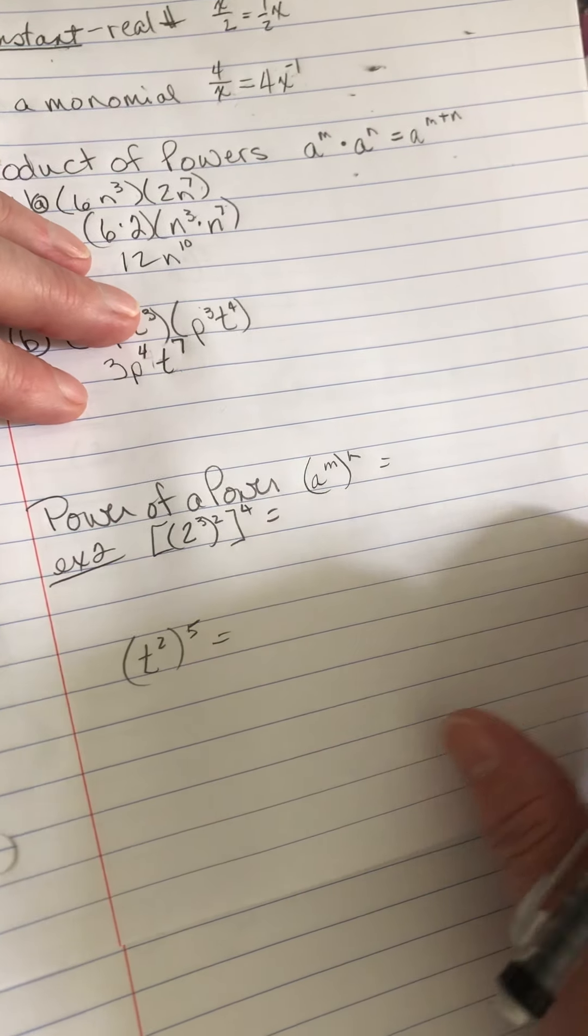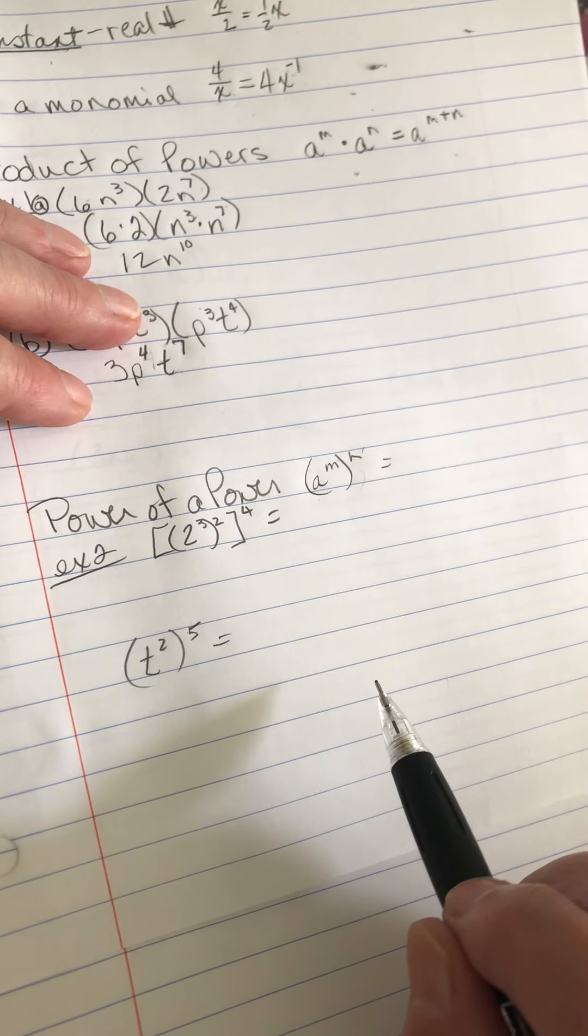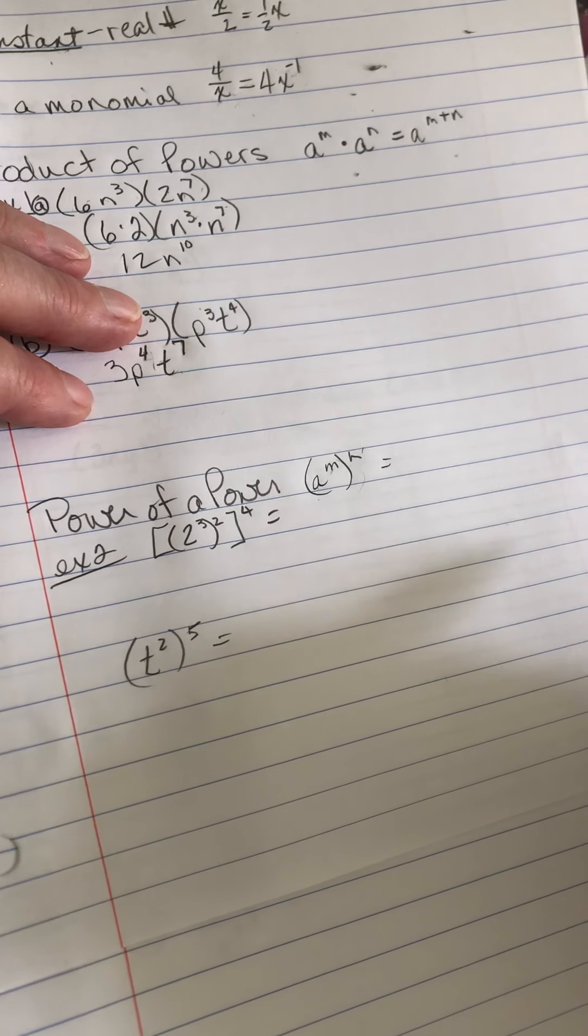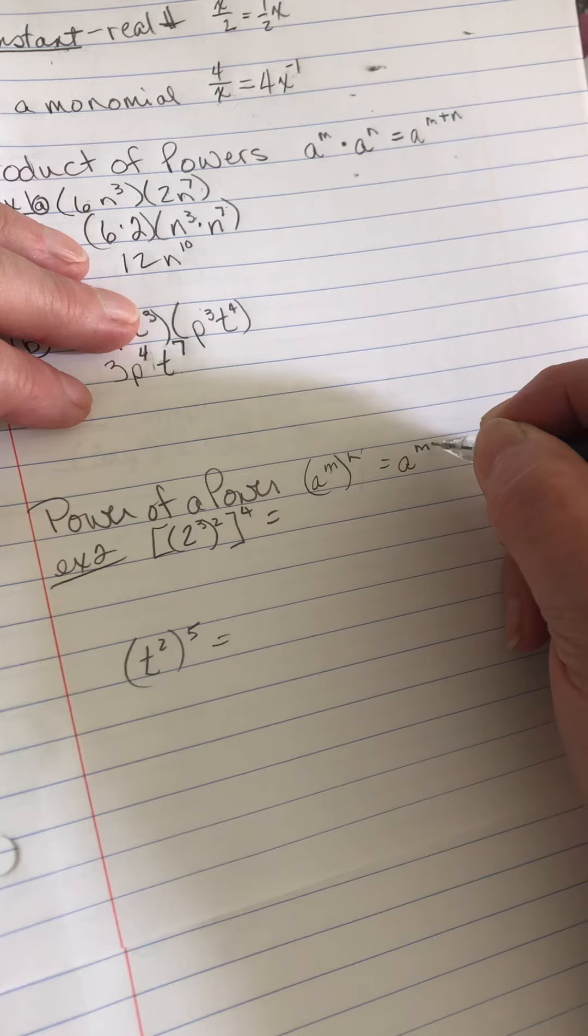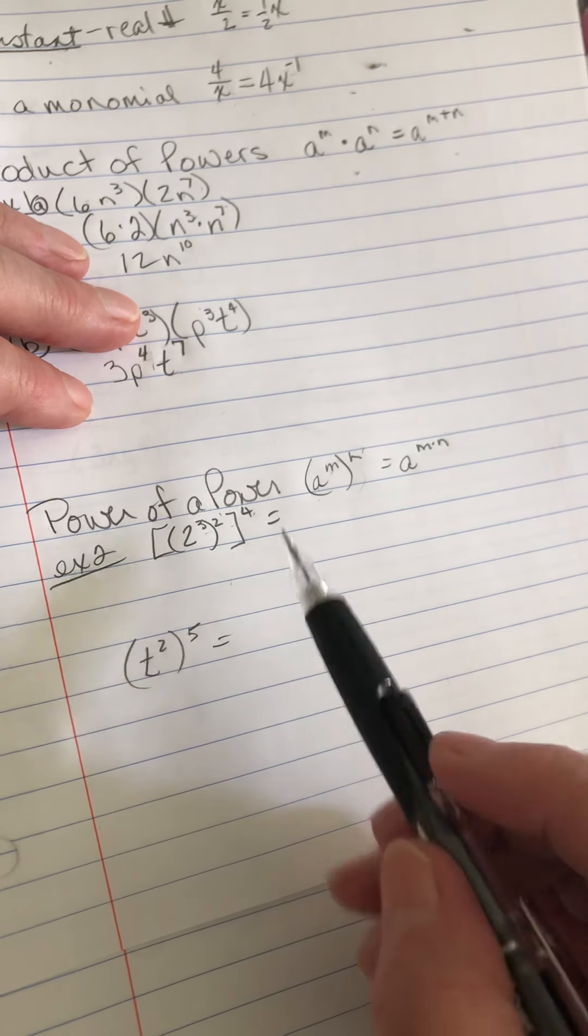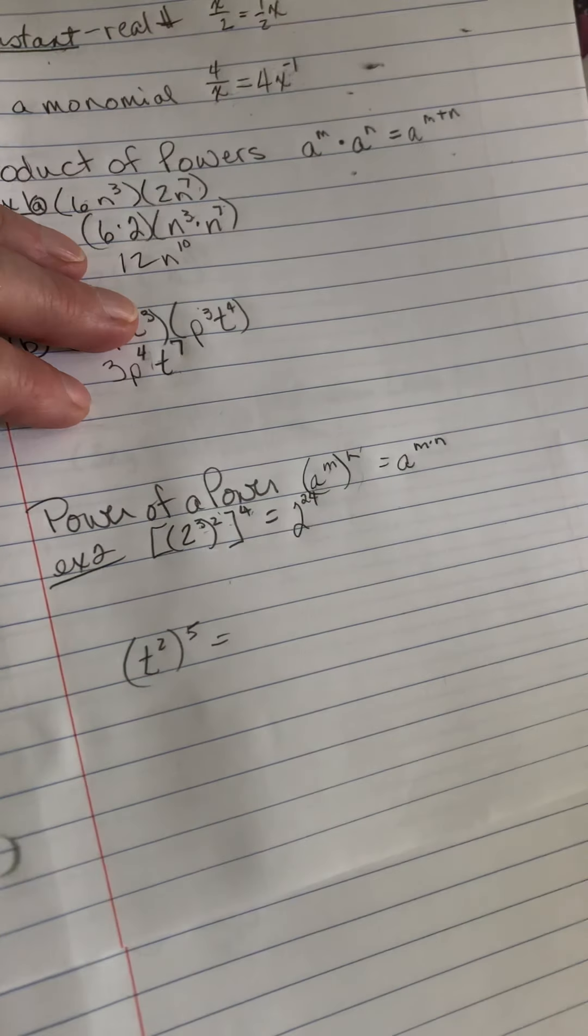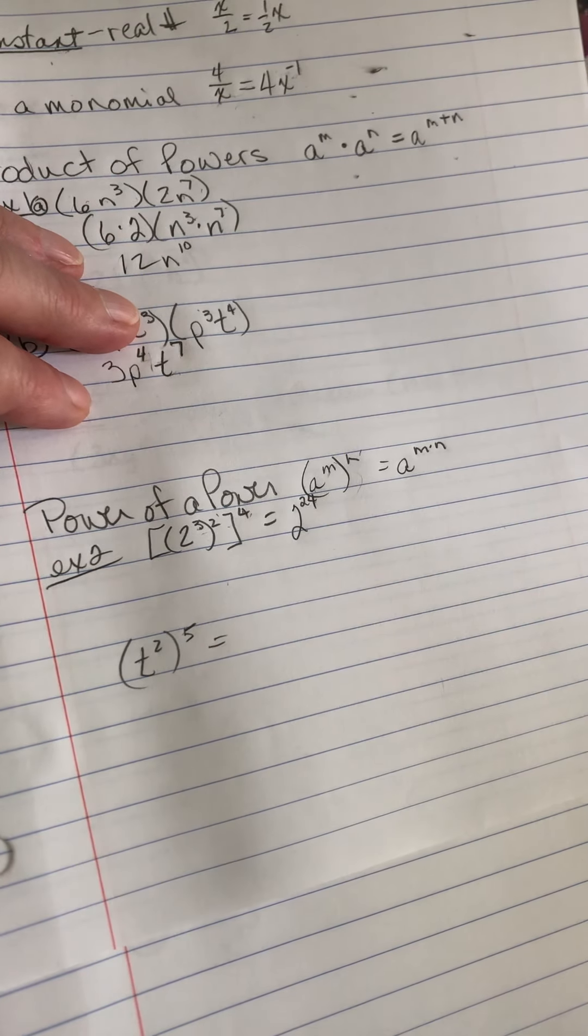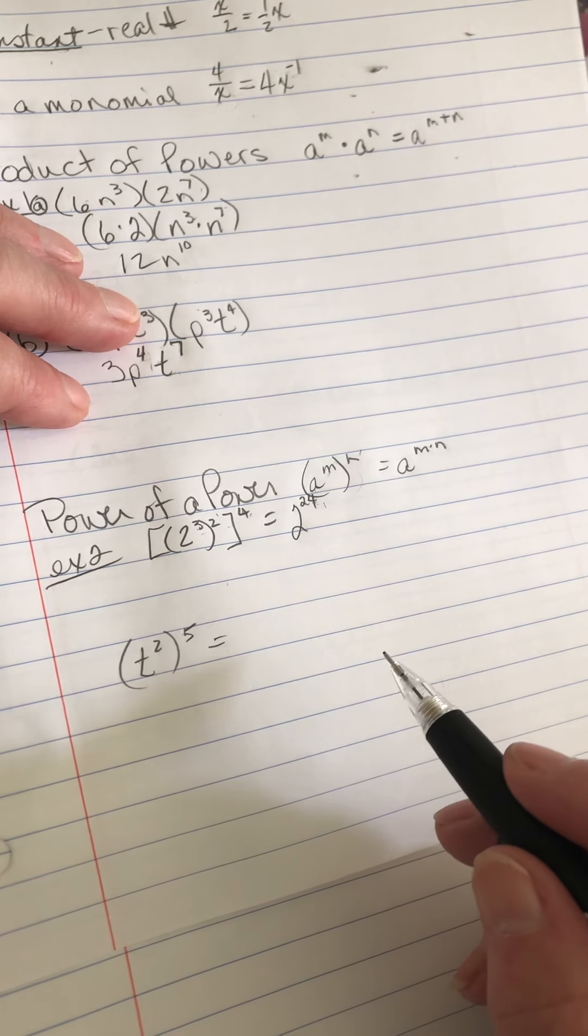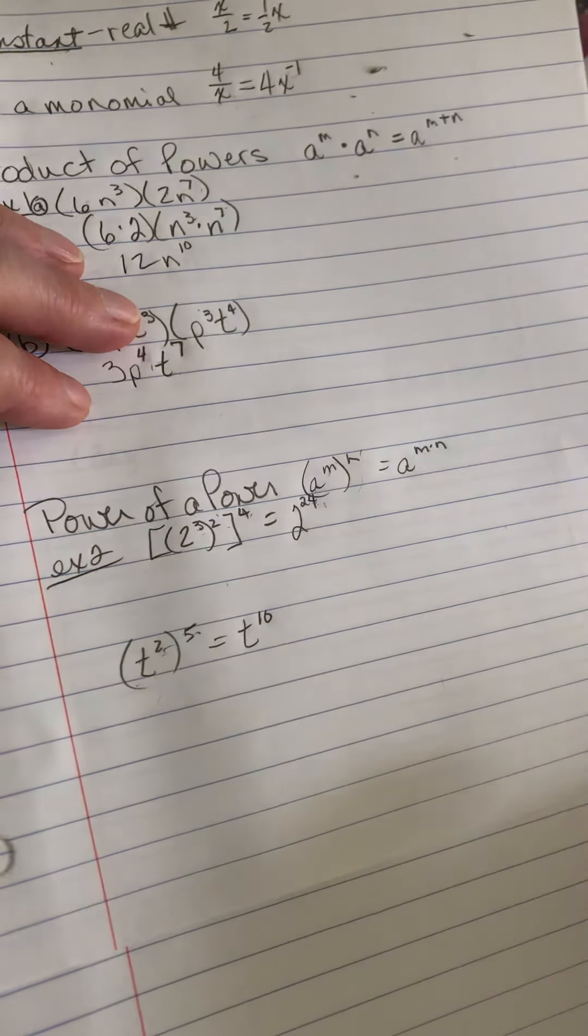Power of a power. Here's a new one. If I have a to the m power raised to the n power, that means I have a to the m written as a factor n times. This is where we multiply. So when I have 2 to the 3rd raised to the 2nd raised to the 4th, all those powers I'm just going to multiply. 3 times 2 is 6, 6 times 4 is 24. This is 2 to the 24th power. And if I had my calculator I could figure out what that is, but oftentimes when they're that big you usually can just leave it. It is a number though, so I could calculate it. T to the 2nd raised to the 5th, I'm just going to do 2 times 5, that gives me T to the 10. Make sure you try the guided practice.